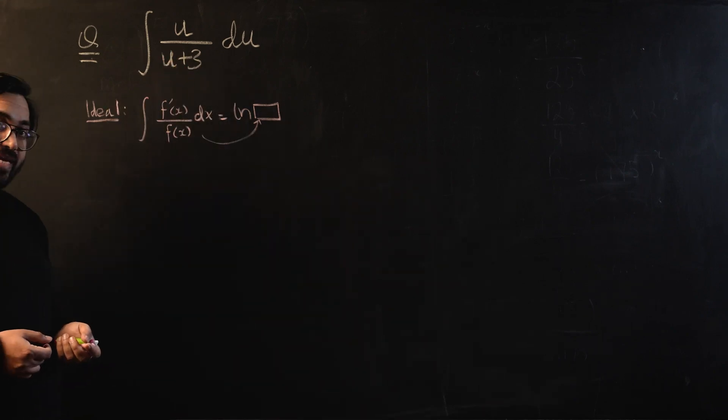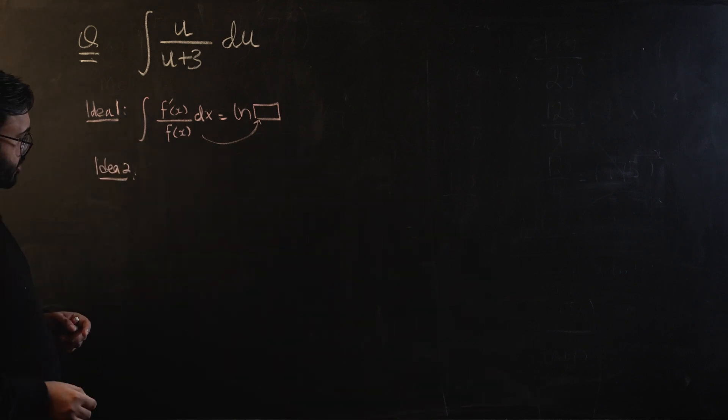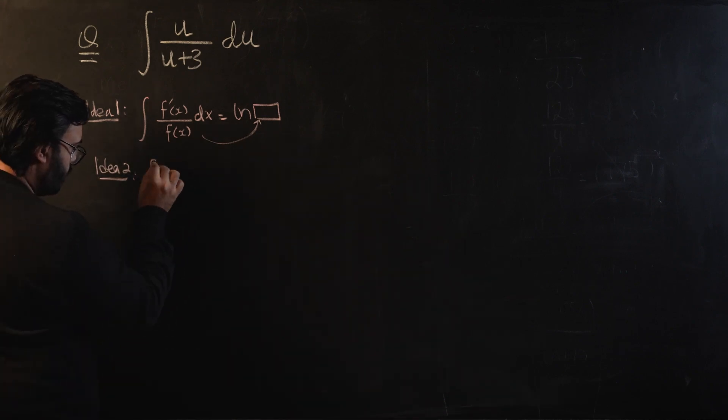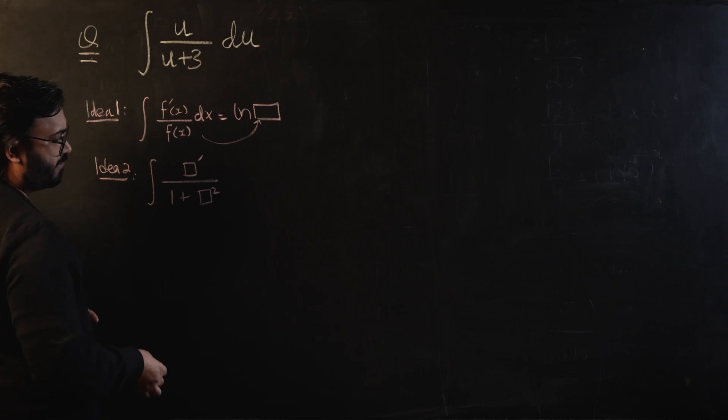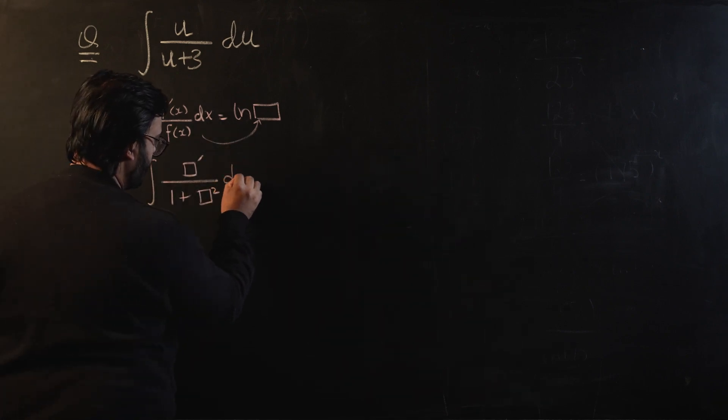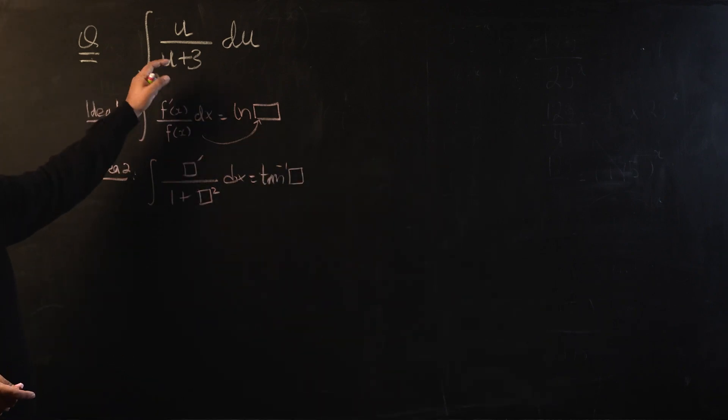The second idea that you can think of while using fractions is the one for tan inverse. When you have 1 plus something squared in the denominator and you have differentiation of that something, that gives us tan inverse of that box. Now this idea also can't really be used over here.